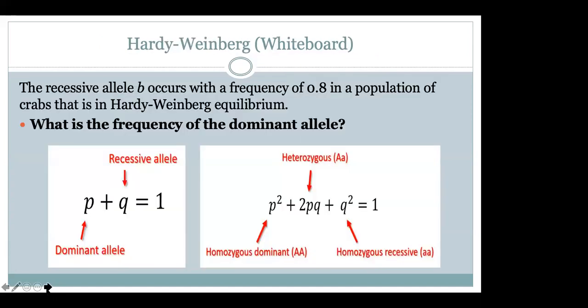Another option that goes along with our share screen feature is the whiteboard. The whiteboard allows — as I'll show you in a moment — one of the big concepts we discuss in population genetics: an equation called Hardy-Weinberg equilibrium. I won't go through all the details, but I wanted you to see that we're able to give students questions such as this and walk through the equation.